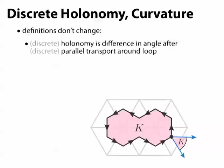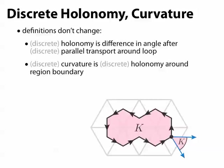Discrete holonomy is just the difference in angle after we discreetly parallel transport a vector around a loop, and discrete curvature is just the discrete holonomy around a region boundary.